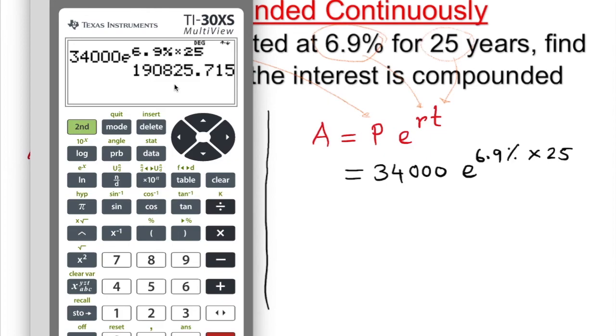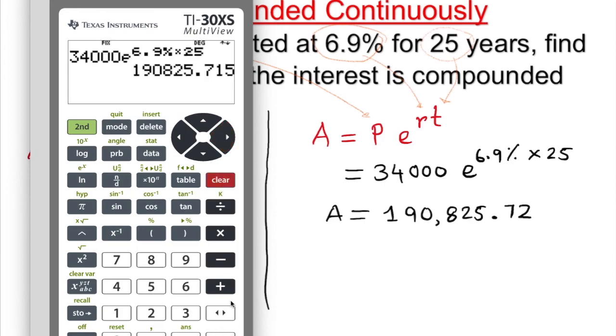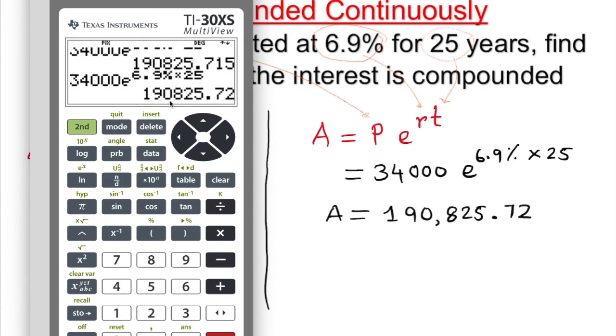So what is the answer? 190,000. So amount continuously is going to be 190,825 dollars 72 cents. Because money answer we should convert into two decimal places. We round it up. We can even round up here. So we go to mode, we go to float, and we choose number 2. Enter. Look, we have to get out from the screen. So we're going to clear, then enter again. As you see, 190,825 dollars 72 cents.